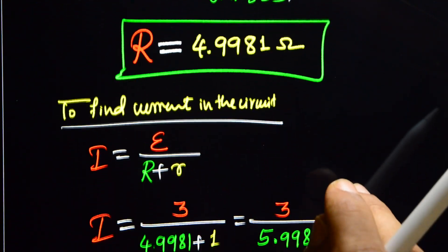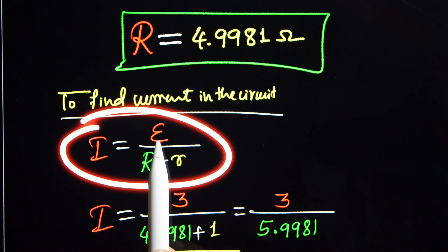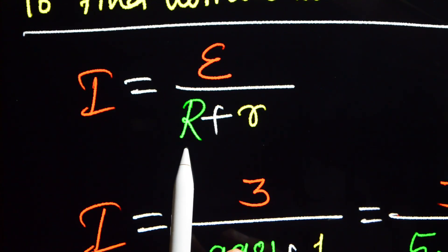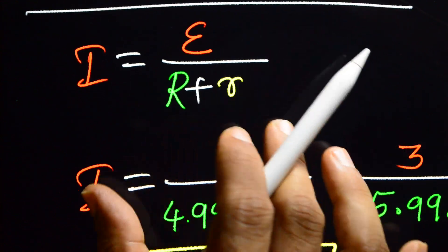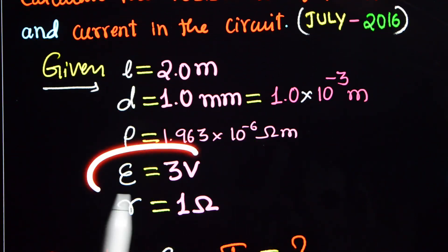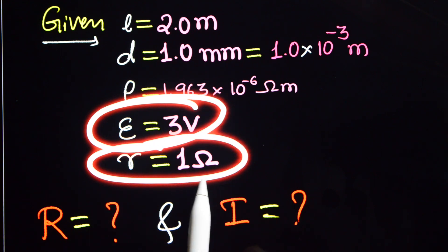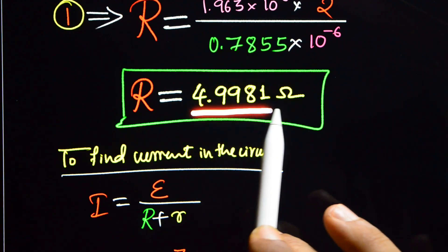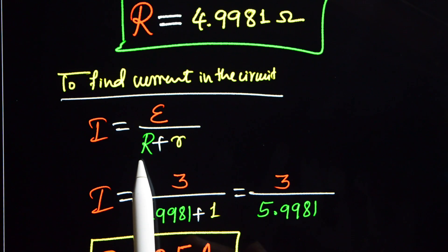Now we need to calculate the current in the circuit. I is equal to EMF of the cell divided by total resistance, which is external resistance R plus internal resistance r. The EMF is 3 volt, the internal resistance r is 1 ohm, and we have just calculated R as 4.9981 ohm.